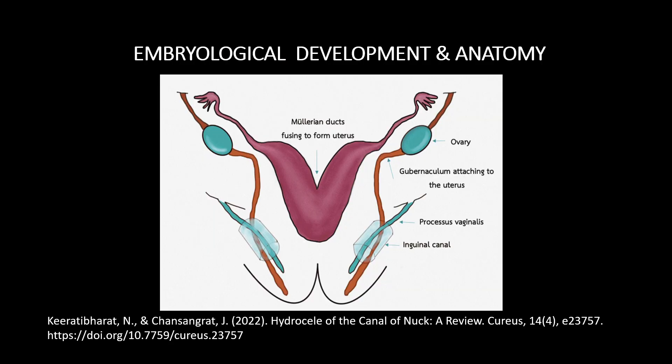Now let's discuss the embryology. In both males and female fetuses, two structures play a key role in inguinal canal development: the gubernaculum and the processus vaginalis. The gubernaculum is a fibrous structure connected to the inferior pole of the gonad and extends down to the groin area.